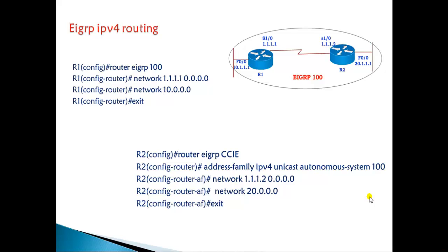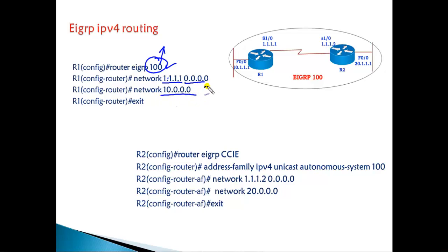In this video we'll see how to configure IPv4 and IPv6 routing using the EIGRP name mode, and we'll compare the configurations with classic mode versus name mode. In classic mode, we use router EIGRP with an autonomous system number and advertise the network ID with a wildcard mask, or use the network command to advertise with the default netmask.